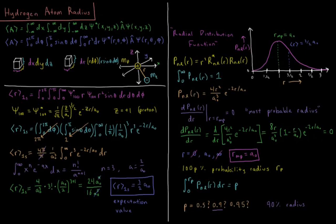In this video we'll calculate a couple different measurements for what the radius of the 1s atomic orbital is in our hydrogen atom quantum mechanical model system.